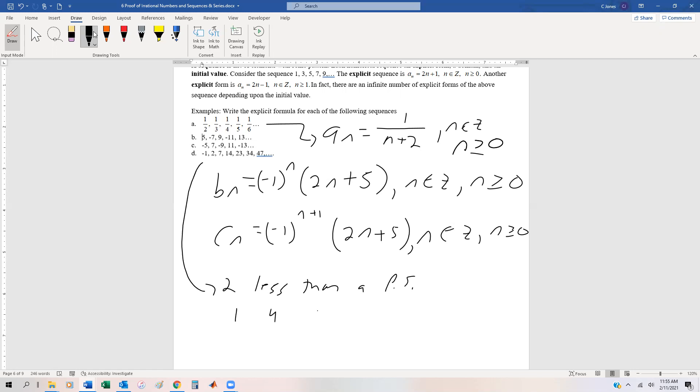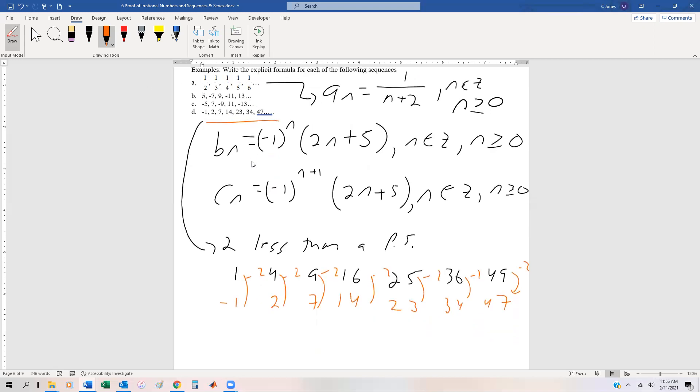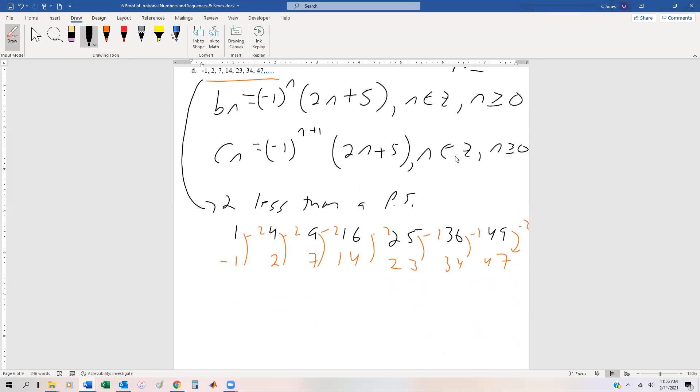it looks like each of these numbers is 2 less than a perfect square. And we know our perfect squares are 1, 4, 9, 16, 25, 36, 49. And if we look at our list here, negative 1, 2, 7, 14, 23, 34, 47, we're just subtracting 2 from each of those. So this was a sneakier one than the previous because it's not arithmetic by nature. In other words, like the previous two, we were just adding a number to be able to get to the next term.